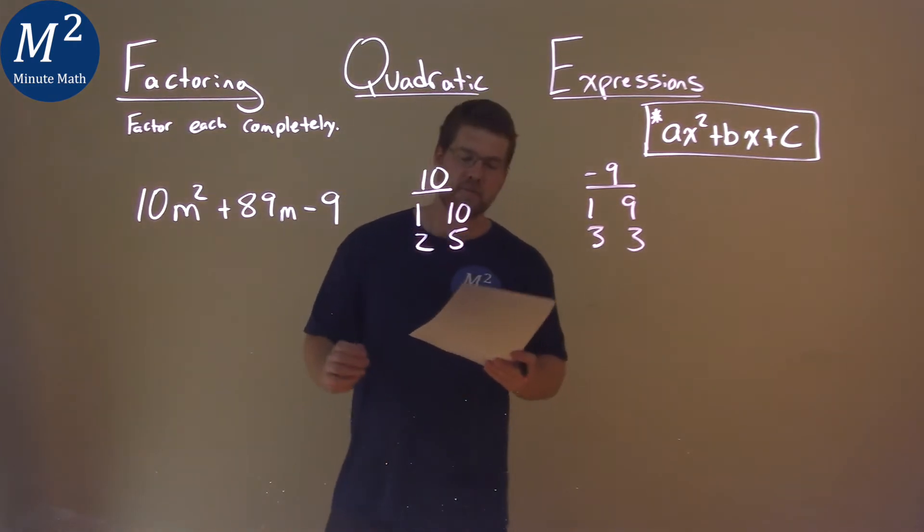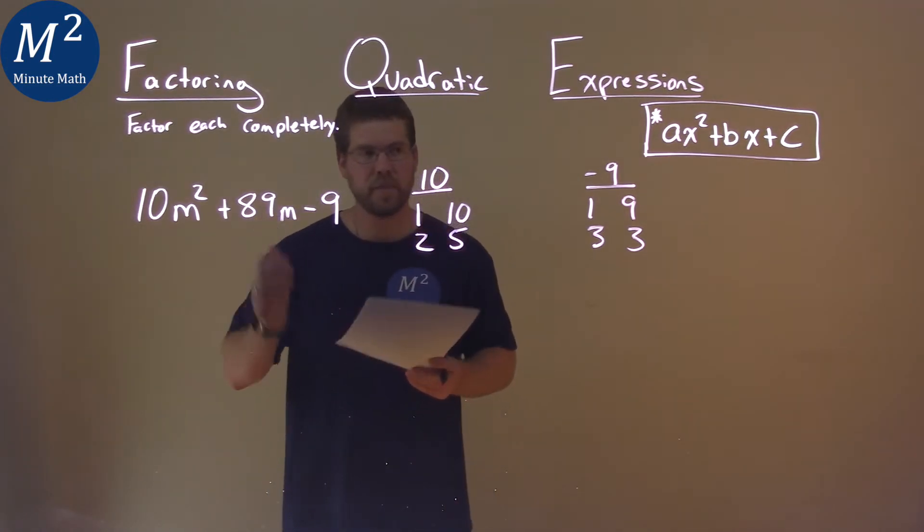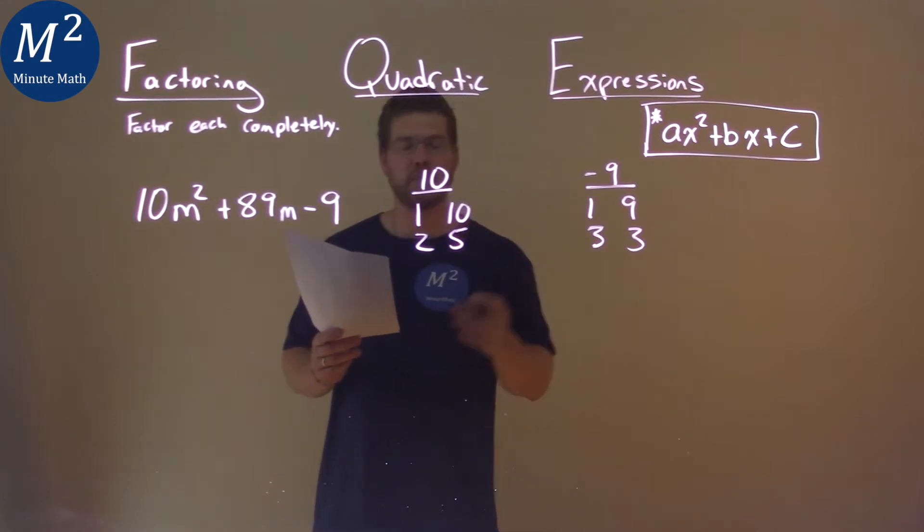And because our c value is negative but our b value is positive, positive 89, we know only one of these values in the pairs should be negative.